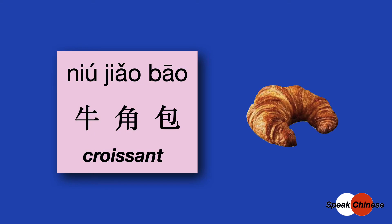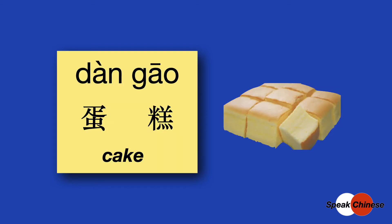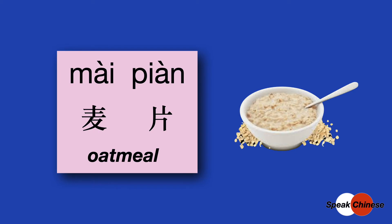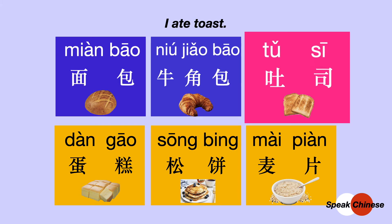面包, bread. 牛角包, croissant. 吐丝, toast. 蛋糕, cake. 松饼, pancake. 麦片, oatmeal. What did you eat for breakfast today? 你今天早餐吃了什么? 面包,牛角包,吐丝,还是蛋糕,松饼,麦片。 今天早上我吃了吐丝。 你呢?